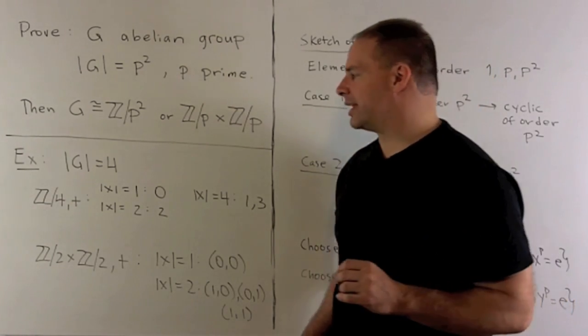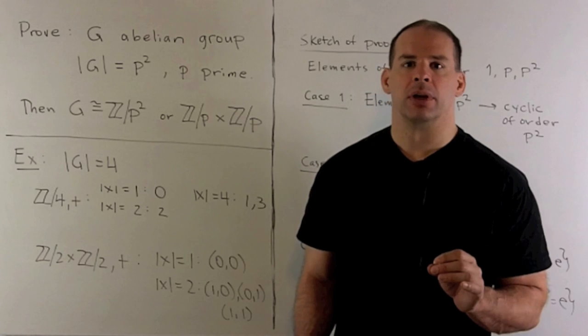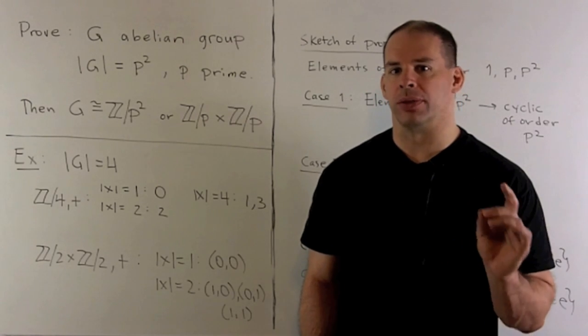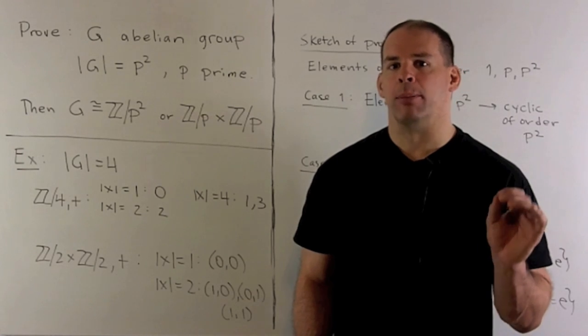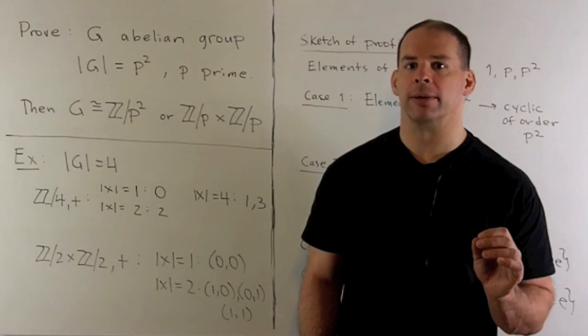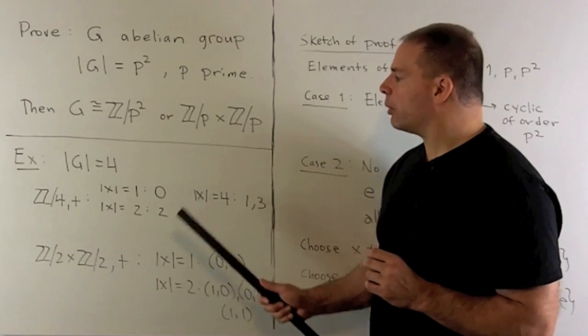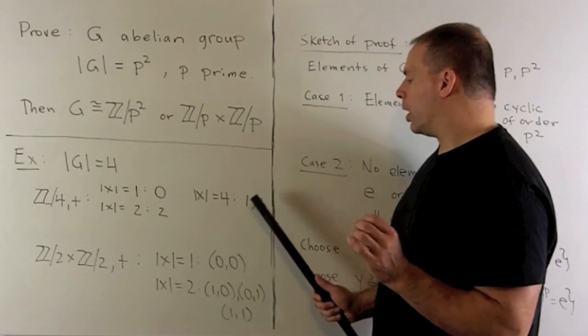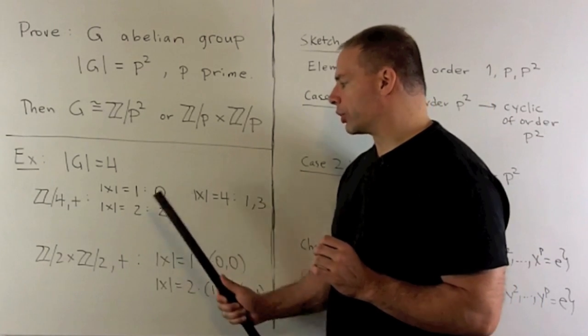Here we'll represent these by Z mod 4 under modular addition. So it's just a label 0, 1, 2, and 3. We add and subtract as normal, but we add or subtract multiples of 4 to make sure we get back in the set 0, 1, 2, and 3. Then our identity element 0 of order 1. 1 and 3 are going to be elements of order 4. 2 is going to be an element of order 2.